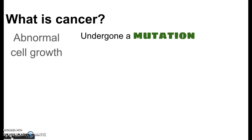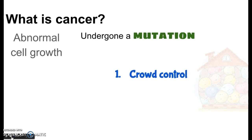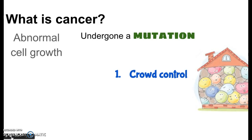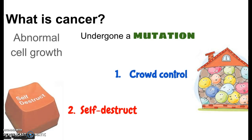Cells undergo mutations quite frequently, but the reason they don't stick around is because our cells are designed — our DNA has a whole bunch of instructions — and two of those things built into our design are quite handy. One is a crowd control type option, and the other is a self-destruct button. All normal functioning cells have both of these on top of what they normally do.